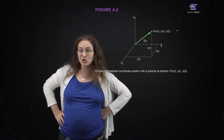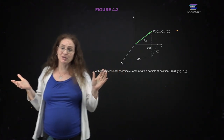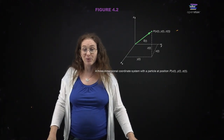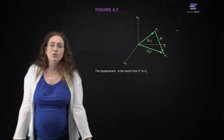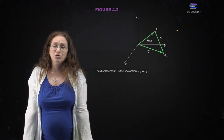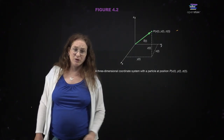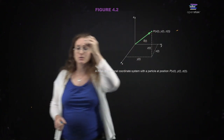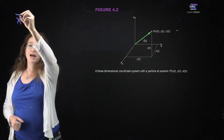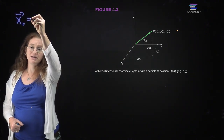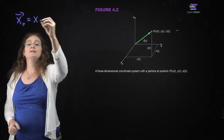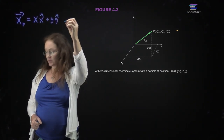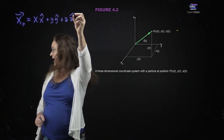It doesn't really matter which you choose. What matters is that when you do a particular problem, you are using the same definition of the coordinate system consistently throughout. Now we're going to talk about displacement vectors. For a particle P, the displacement vector is X times X-hat plus Y times Y-hat plus Z times Z-hat.